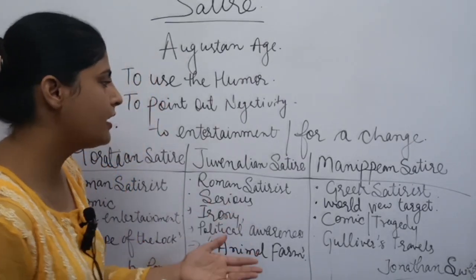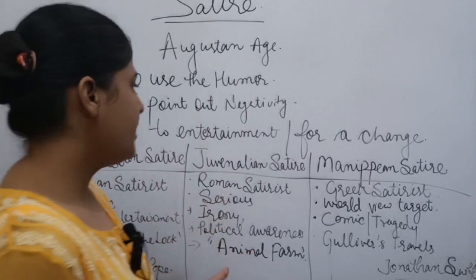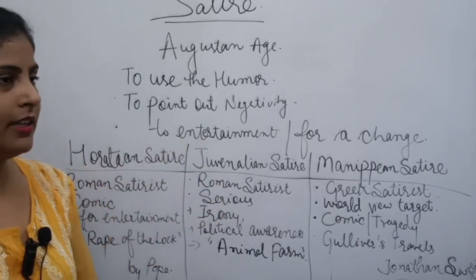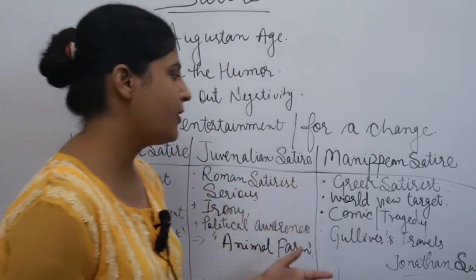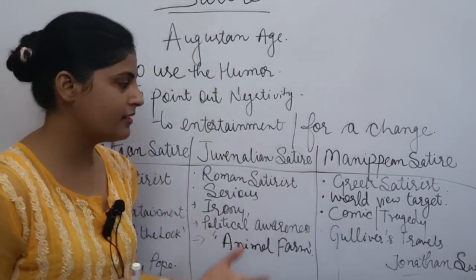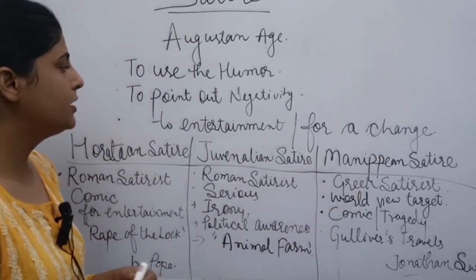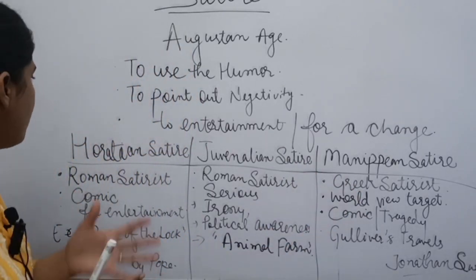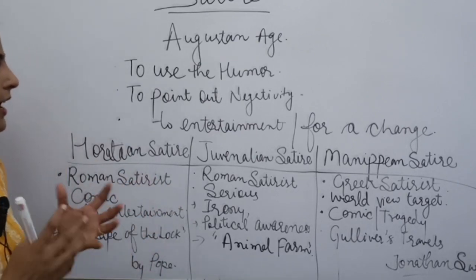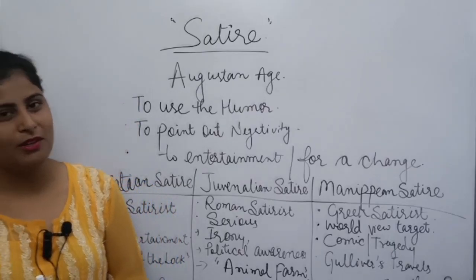Next is Menippean satire, which was a Greek satire — its name came from the Greek philosopher Menippus. It targets worldview and philosophical attitudes. It contains both elements: comic plus tragedy. The best example is Jonathan Swift's work Gulliver's Travels. These are some famous kinds of satire. I hope your concept of satire is now clear. Thank you for watching till the end. See you in my next video.